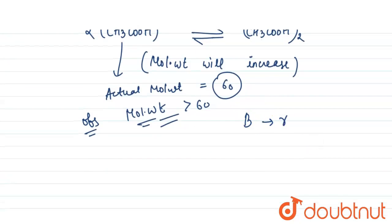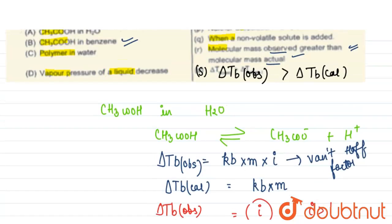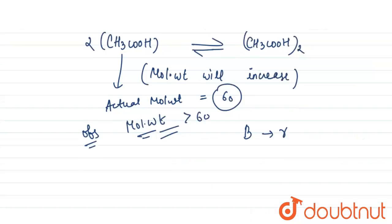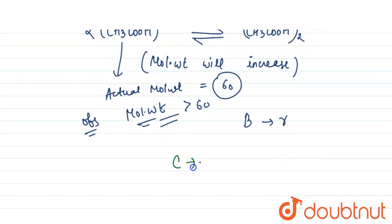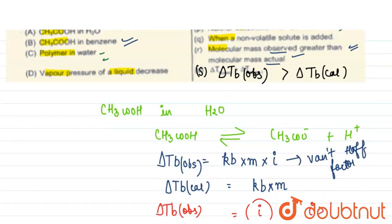Now for our third option: polymer in water. Polymer neither associates nor dissociates — this is a known fact. So C will be matched with P.